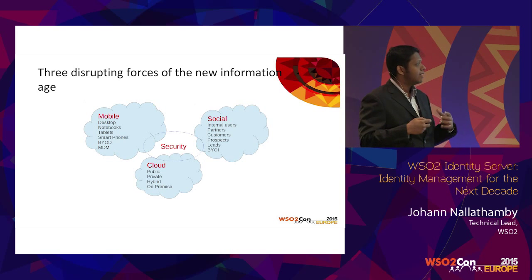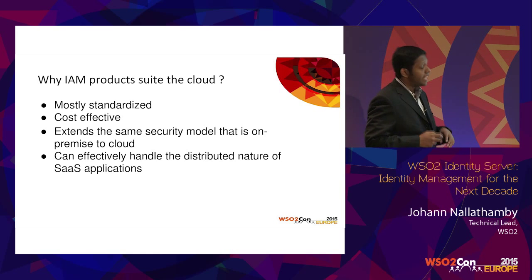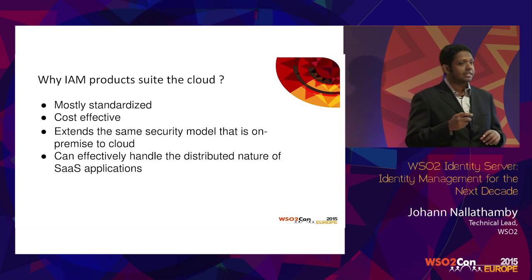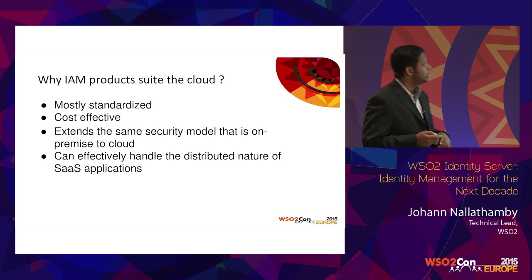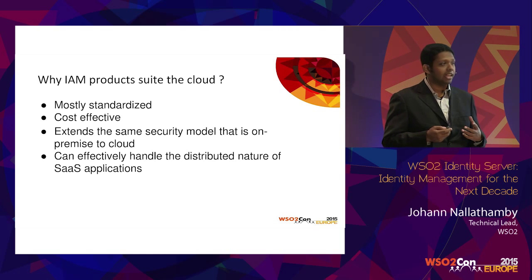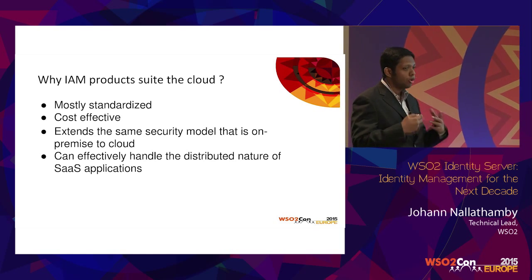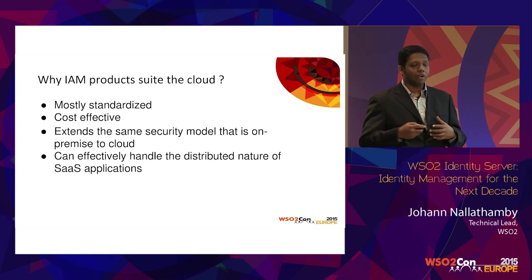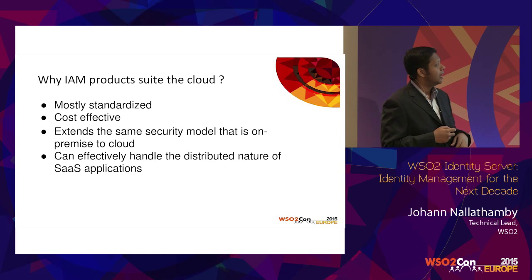These three forces have a lot of effect when you design a good security solution for your organization. Why might an IAM product such as WSO2 Identity Server be a good fit for cloud deployment? It's mostly a standardized product — open standards that are widely accepted. It's cost-effective and extends the same security model from on-premise to the cloud. Cloud-native features are built into the product, migration is easy, and it can handle SaaS applications through multi-tenancy.